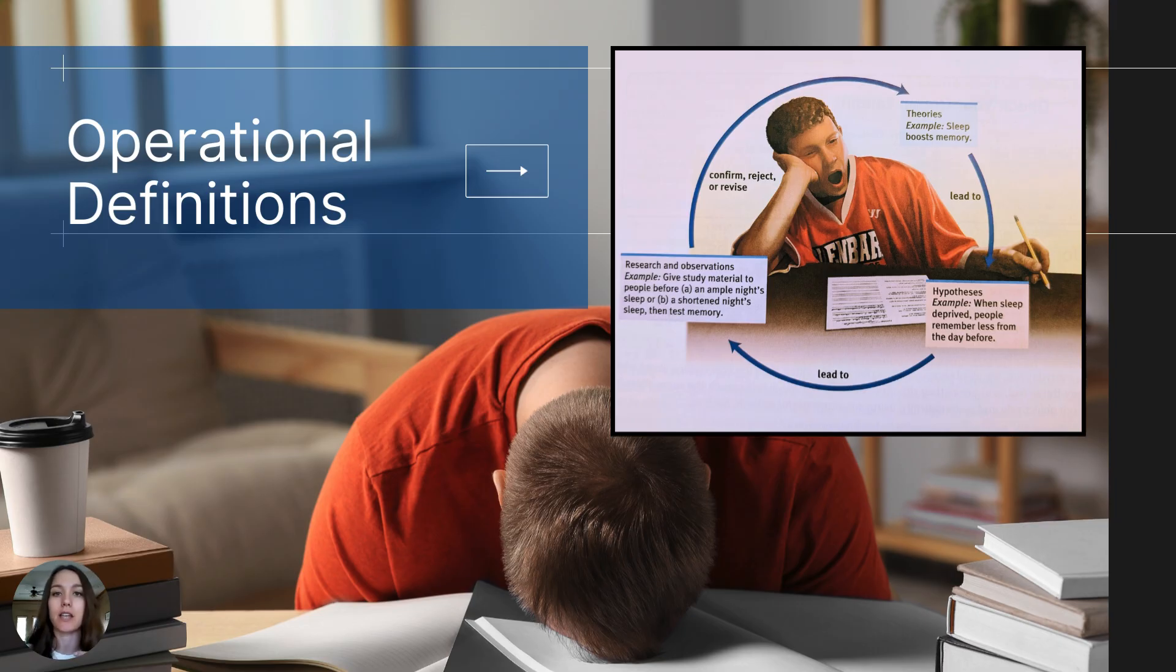If the results from multiple tests come back similar, they are called reliable. So reliable just means that the scores are consistent or the results are consistent time after time. So these are the three key points to remember from this particular section. Operational definitions are carefully worded, detailed explanations of the operations or the procedures of the research study. Number two, operational definitions allow for the process of replication. And number three, replication of studies can prove the reliability of the results.